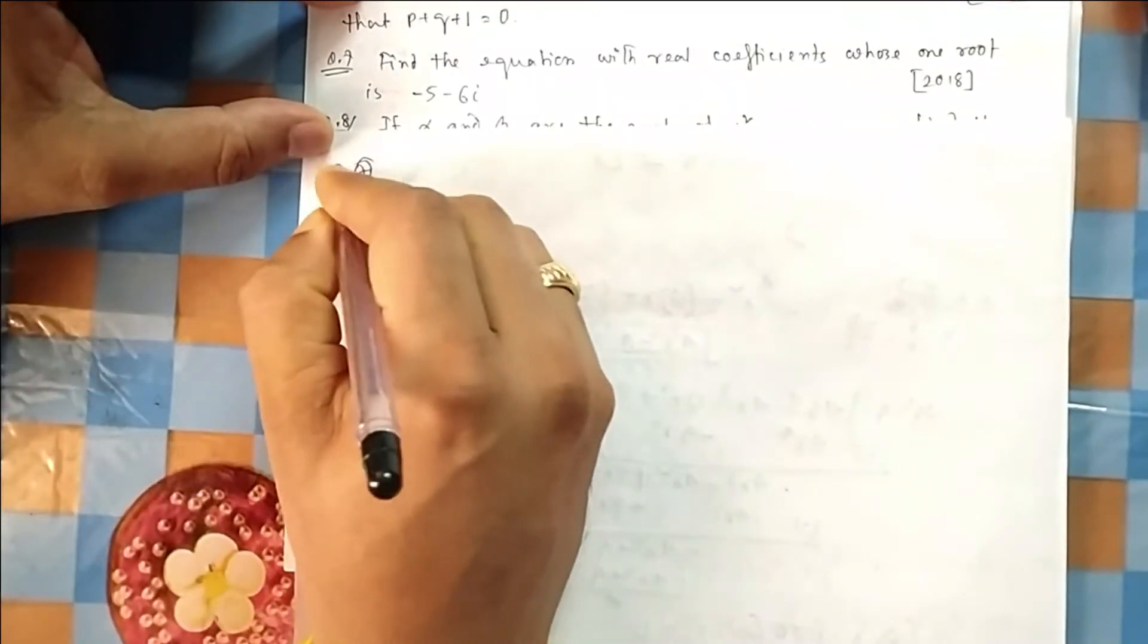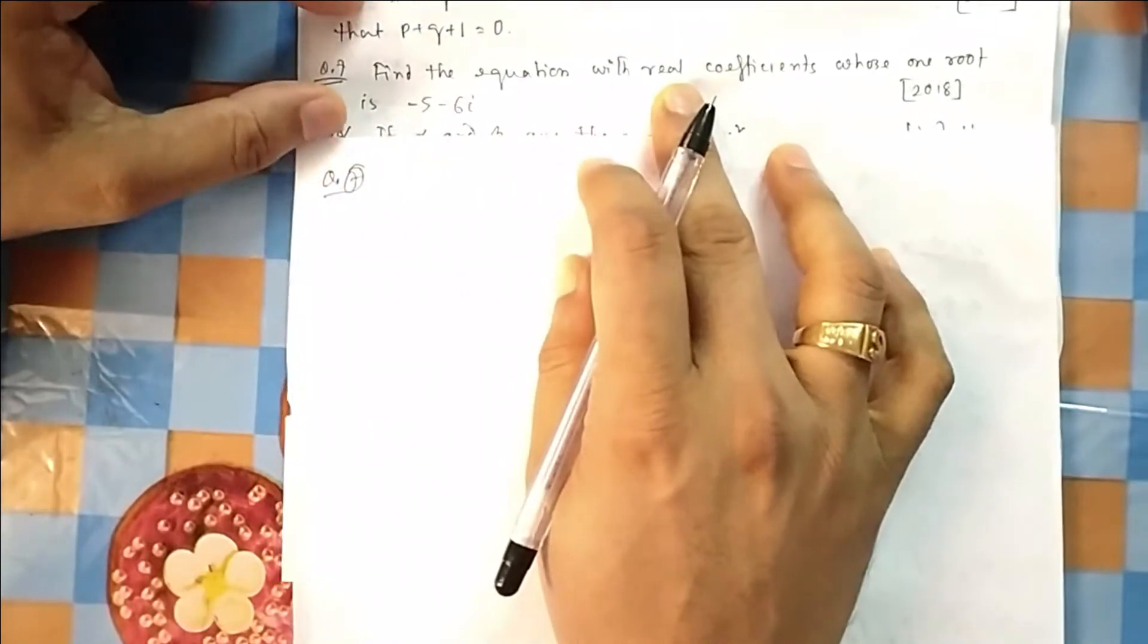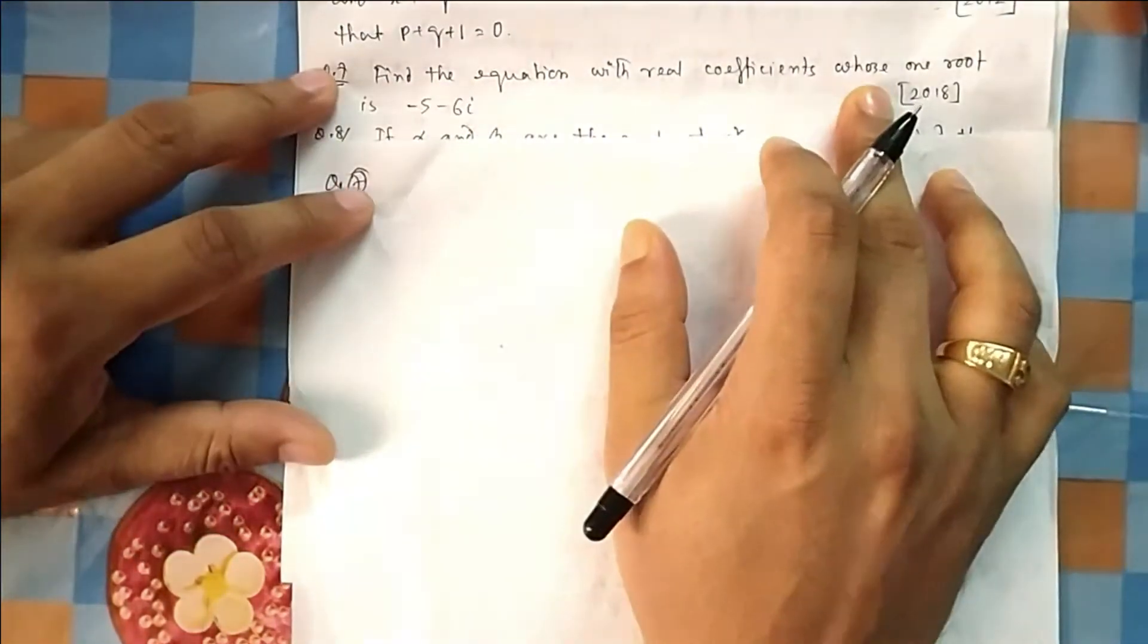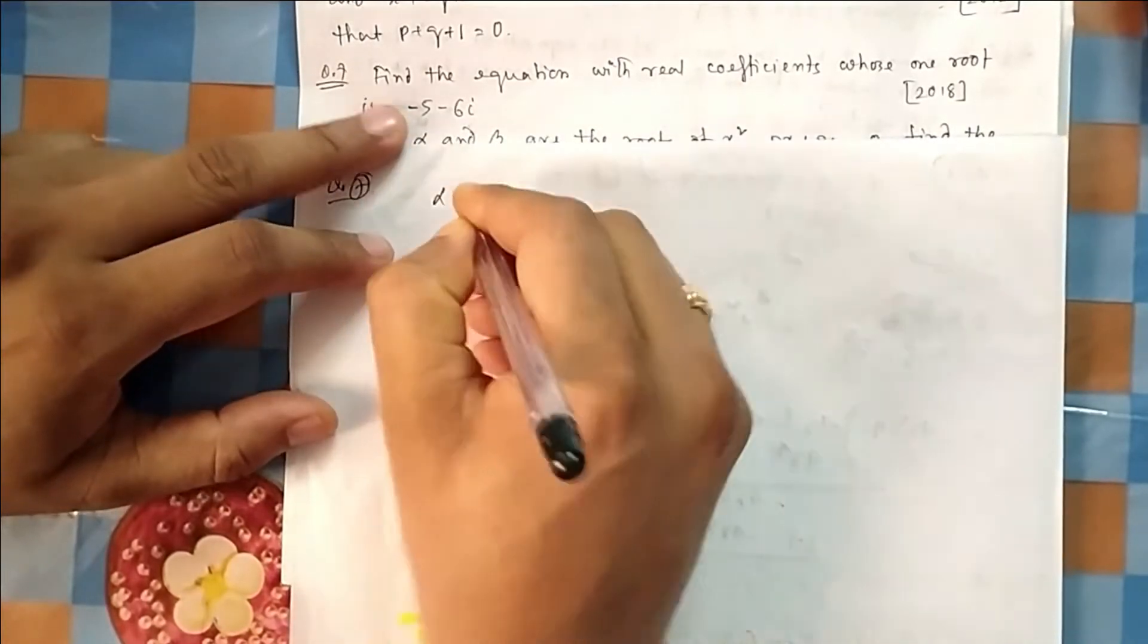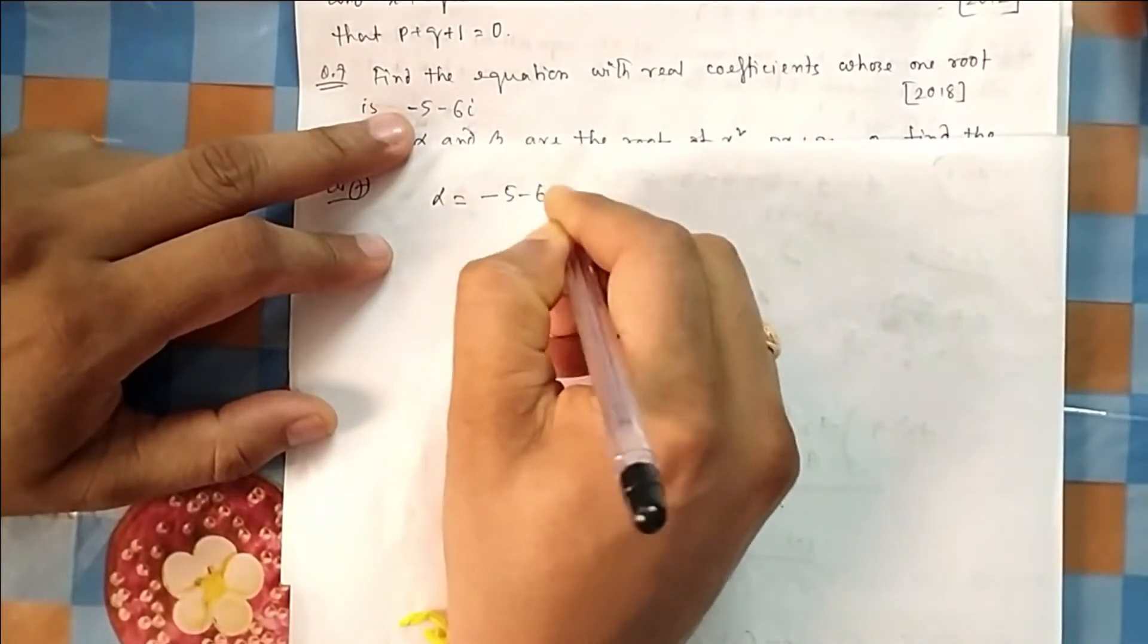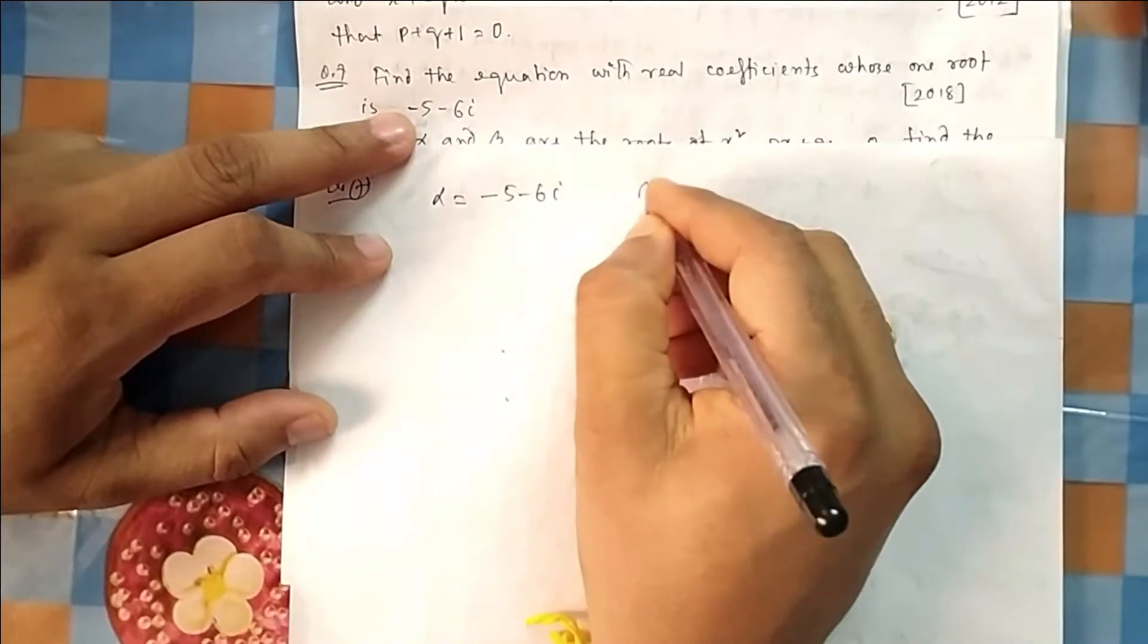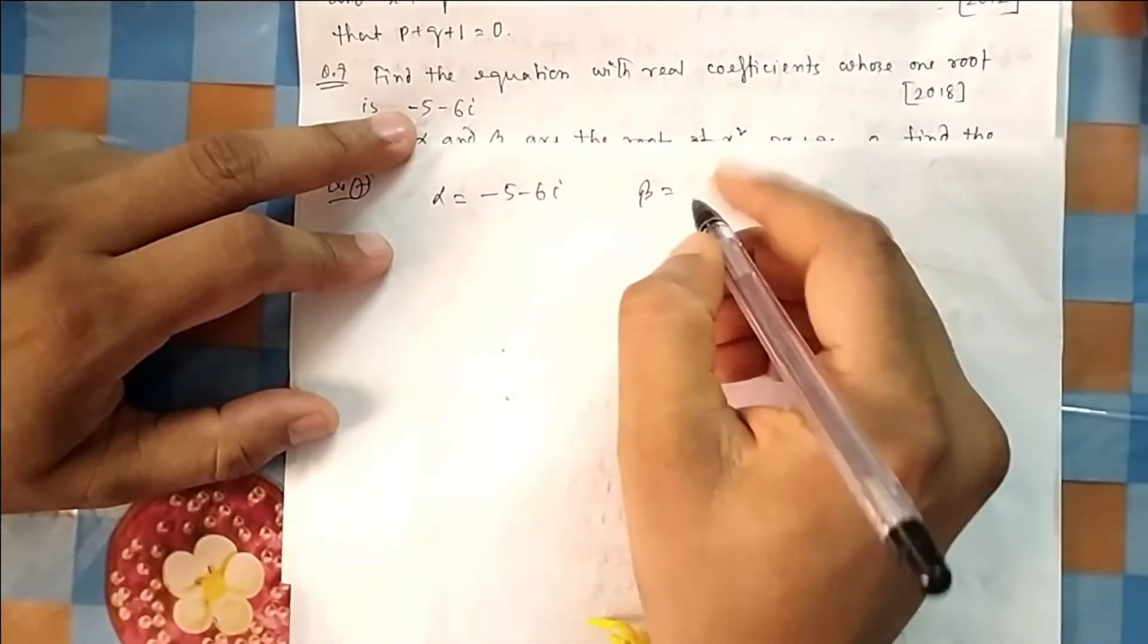If you see question number 7, what they have asked: find the equation with real coefficients whose one root is -5-6i. So one root is given. So you know if one root is complex, then another root is always the complex conjugate of this one.